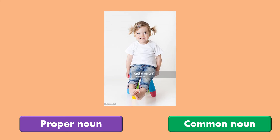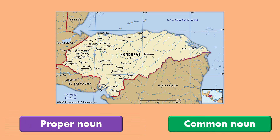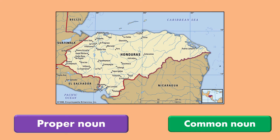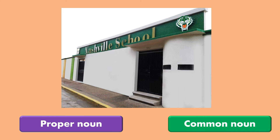This girl — if this girl has a name, she has a proper noun. Honduras, our country, has a proper noun. That school — there are many schools, but our natural school, there's only one, so it's a proper noun.